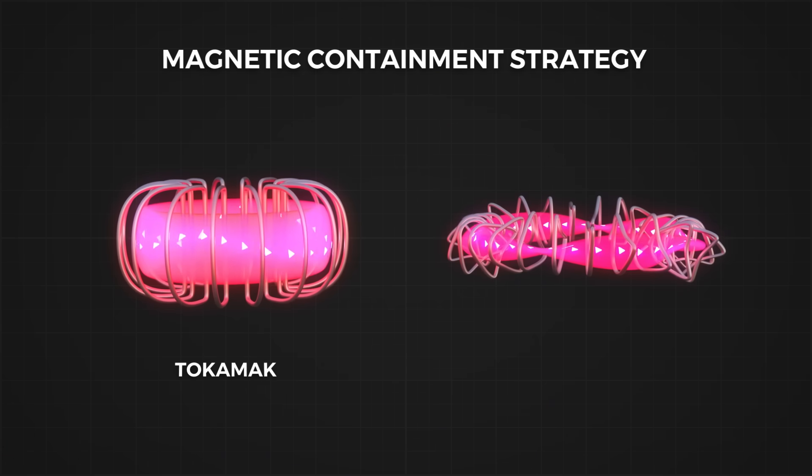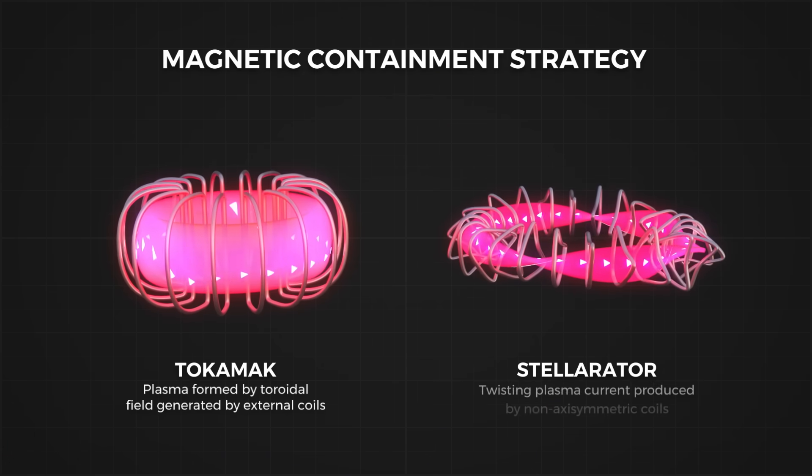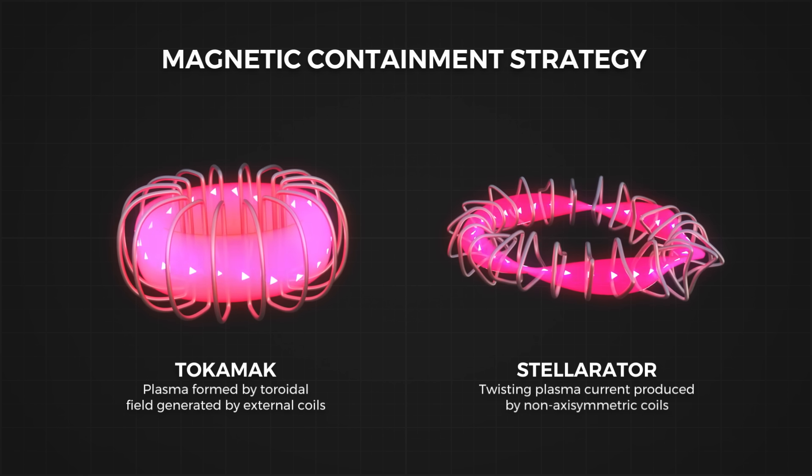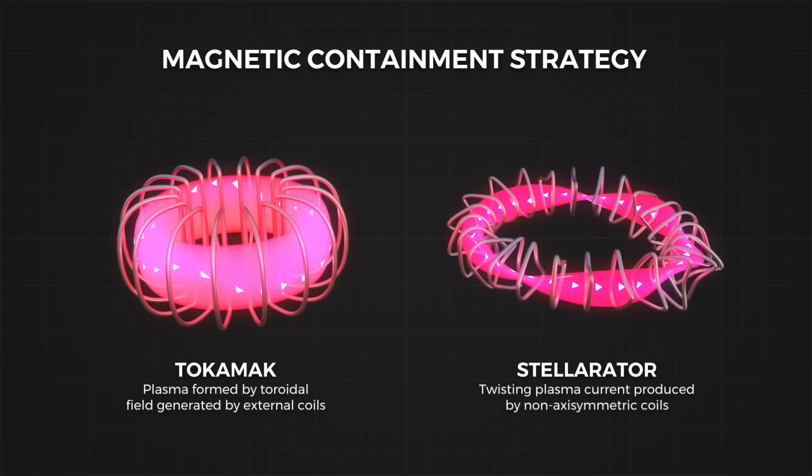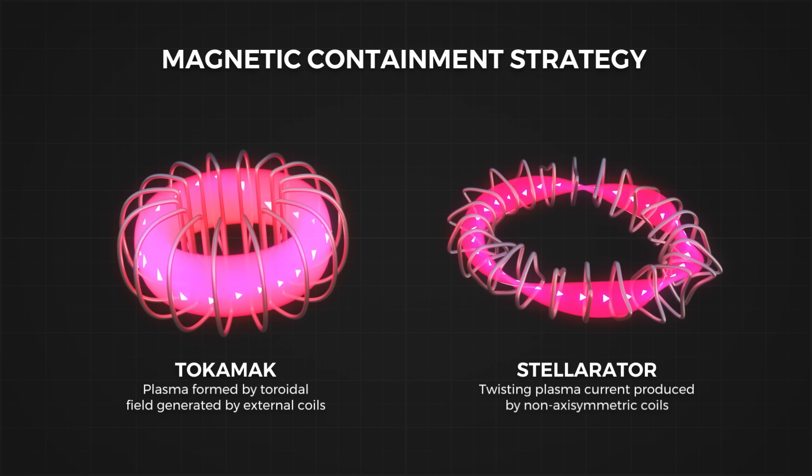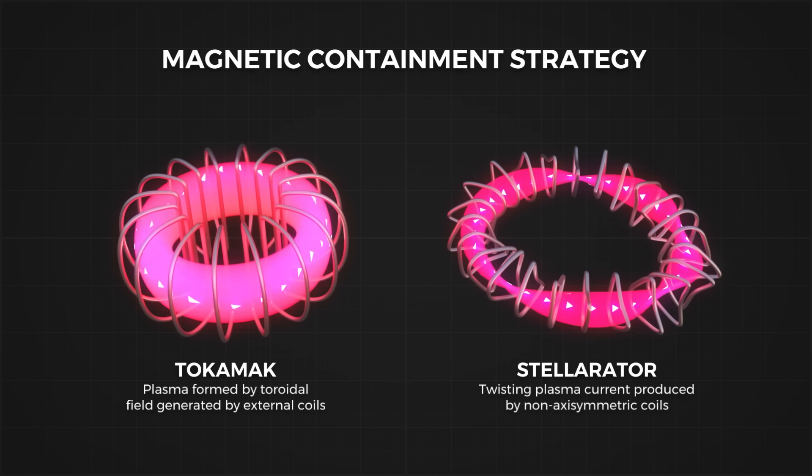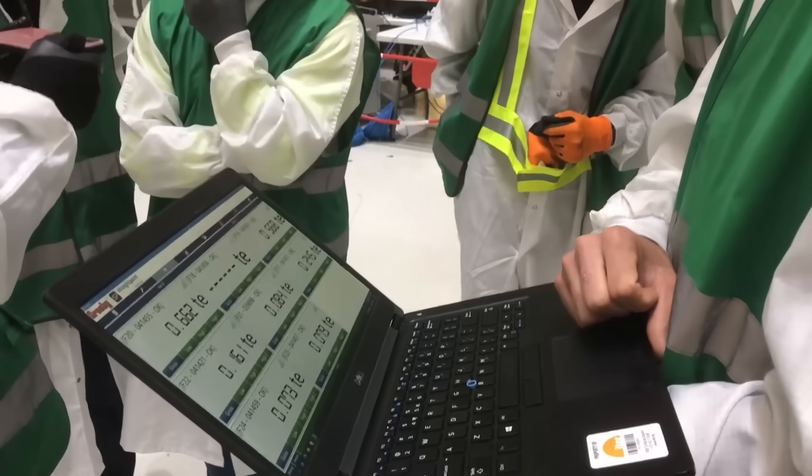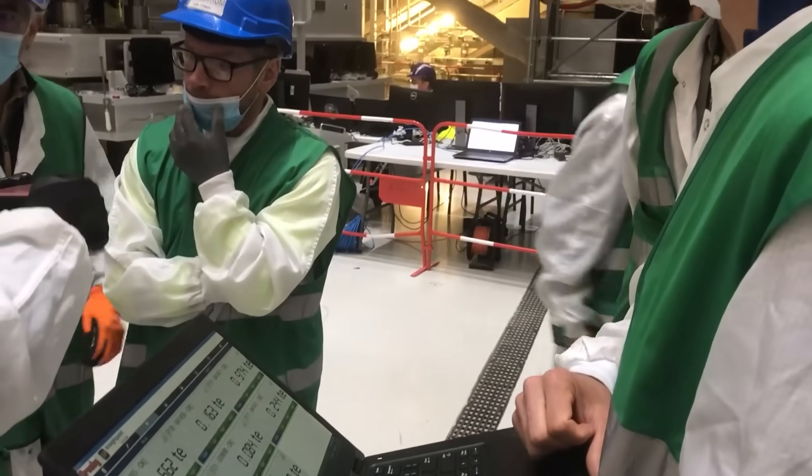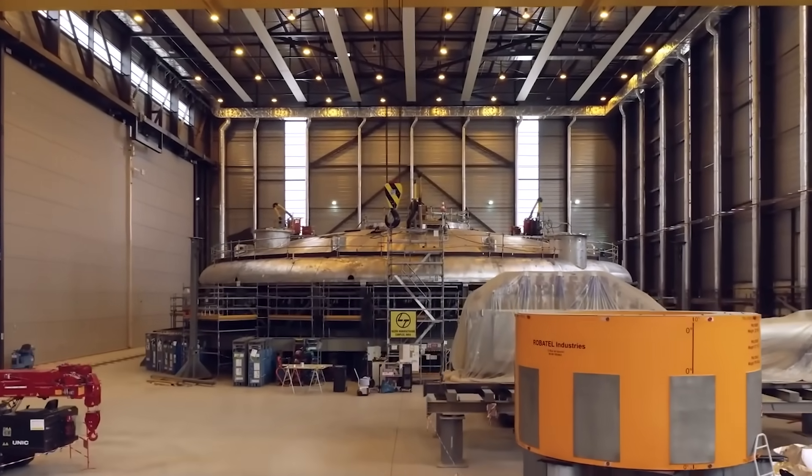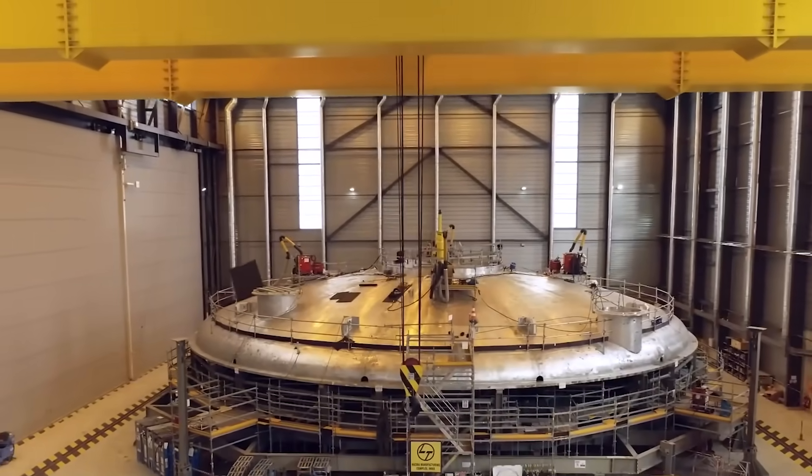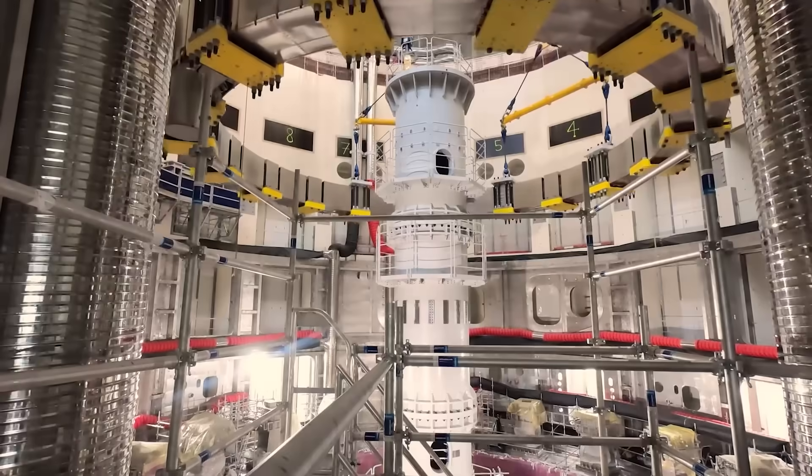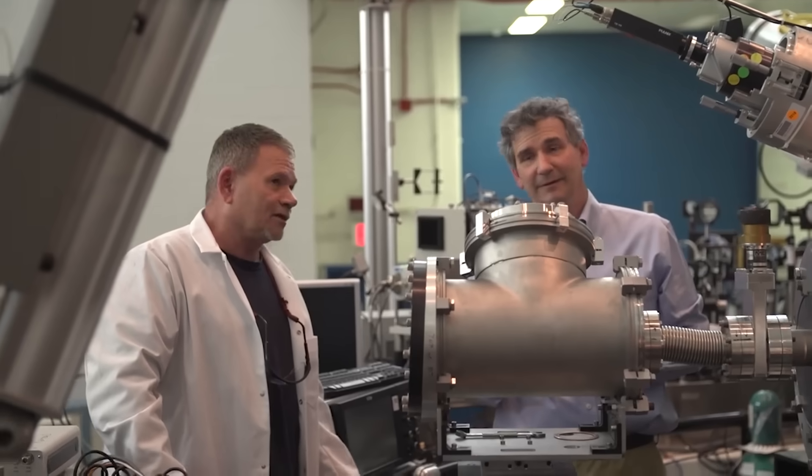Both of these designs, the tokamak and stellarator, use slightly different methods of magnetic field confinement, generated by massive superconducting magnets to achieve fusion. The tokamak became the leading design today as a result of a release of information from the USSR on the tokamak design in 1968, which showed a tremendous jump in energy efficiency. However, both designs used the same fuels.